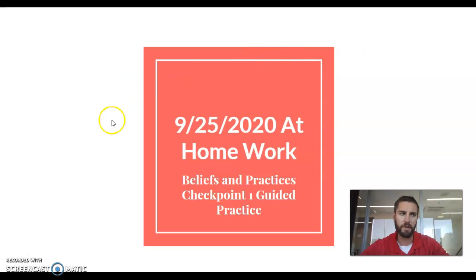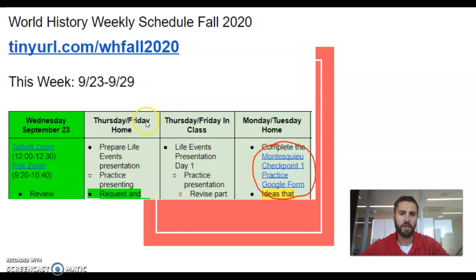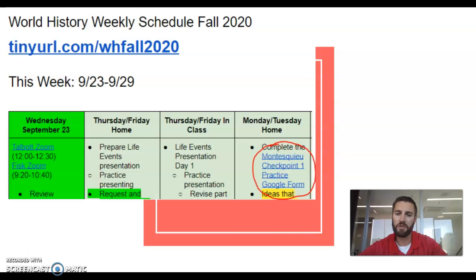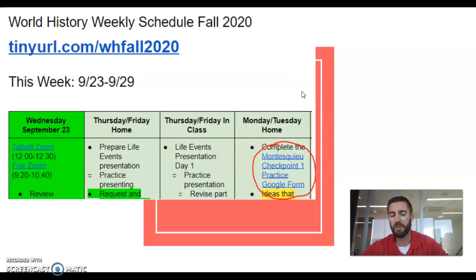That's going to get us in a really good spot for the rest of the project. I'm going to encourage you — if you haven't already — go to our class home document, you see the link up there. There is a practice Google form over one of the Enlightenment thinkers we're going to be doing today in this checkpoint. The advantage of the Google form is you can check your score right away and get immediate feedback to know if you have the right information about this person. So really, really important — do that first. In fact, pause this video, go do that, and then come back once you've finished and got your score.